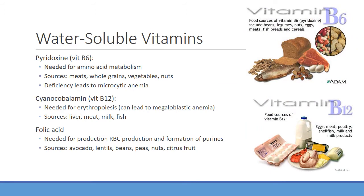Next is vitamin B6 or pyridoxine, needed for reactions including amino acid metabolism. From a toxicology standpoint, pyridoxine is very important for production of GABA, an inhibitory neurotransmitter that depresses the CNS. Certain drugs and even some mushrooms can deplete pyridoxine, which can lead to intractable seizures by inhibiting the ability to utilize it. B6 is also important for hemoglobin production, so deficiency can lead to microcytic anemia.